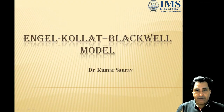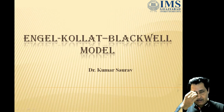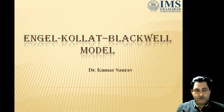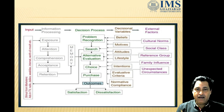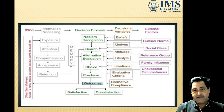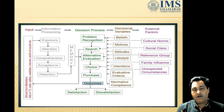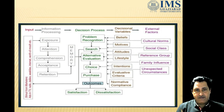This is the Engel-Kollat-Blackwell model, also known as the Engel-Kollat-Miniard model because certain changes were made. These changes involve variables that were highlighted by Miniard as playing a very important role in making decisions. So we call this the Engel-Kollat-Miniard model. First, we are going to discuss what this model is, then we will discuss each and every part of it.